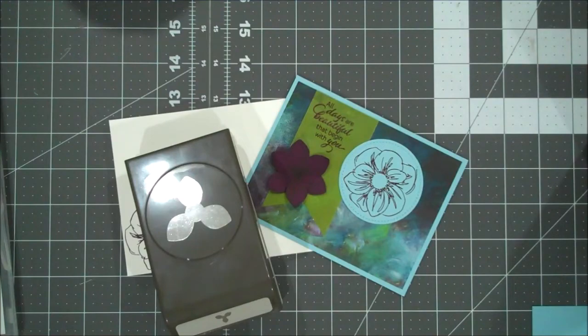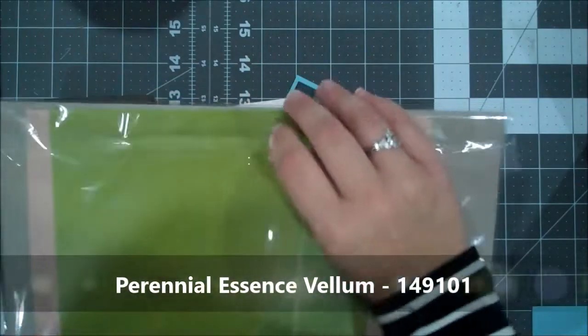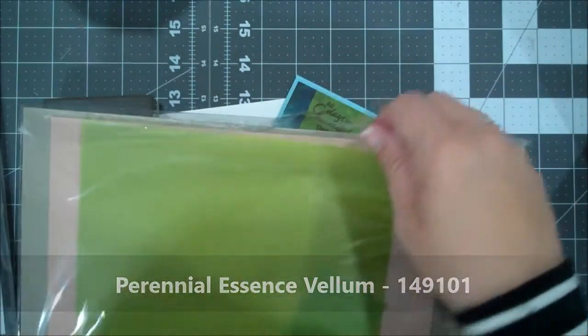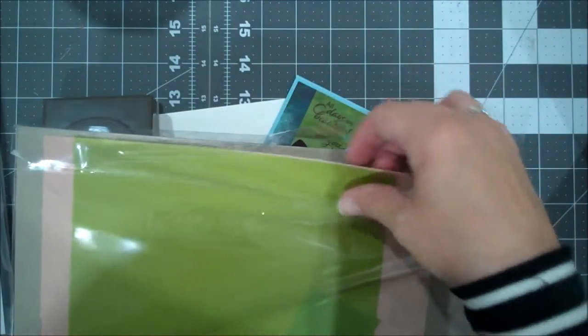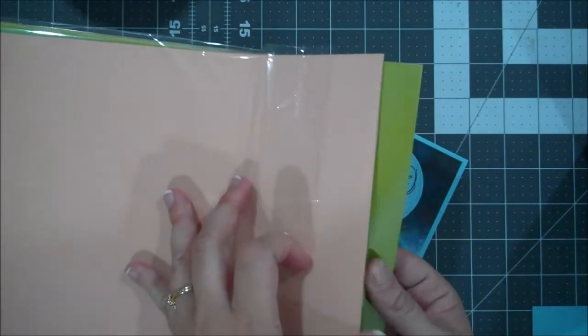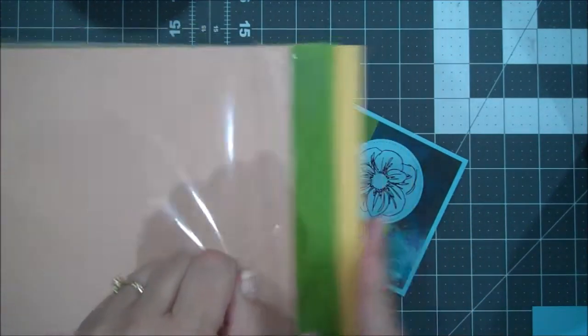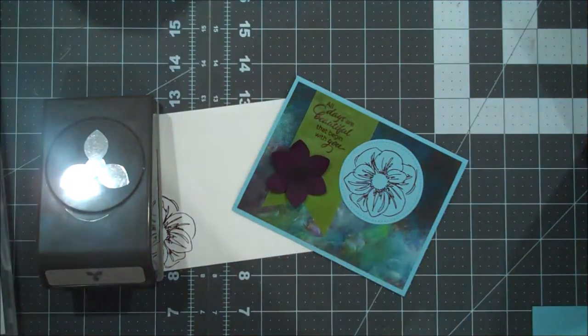And then we're also going to use some new vellum. So if you're not familiar with vellum, it's kind of a transparent paper. Typically it's found in just plain and we have some new colored vellum in our annual catalog. This is petal pink, old olive, and so saffron. And we're going to use a piece of the old olive today for our sentiment.